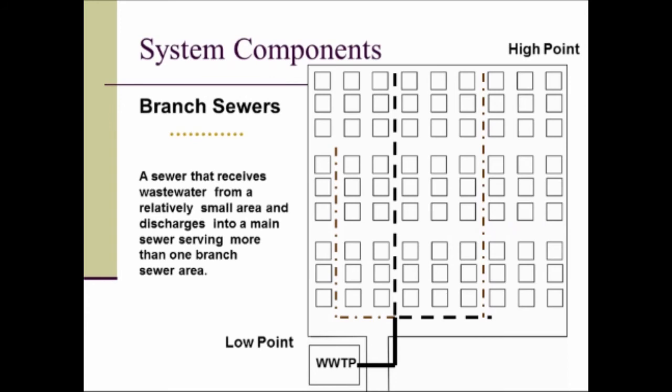Next we have branch sewers. A branch sewer receives wastewater from a relatively small area and discharges into a main sewer that's serving more than one branch sewer area. These yellow dotted lines represent the branch sewers coming from small areas that feed into the sewer mains and ultimately end up at the wastewater treatment plant.